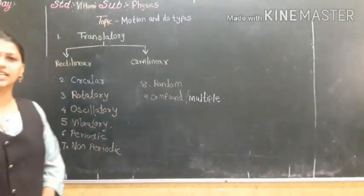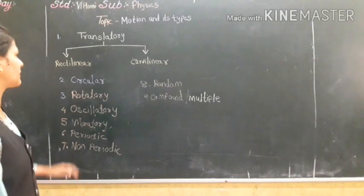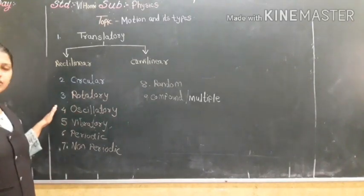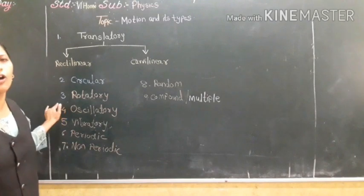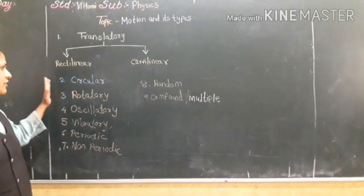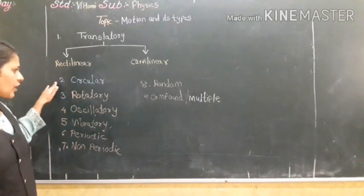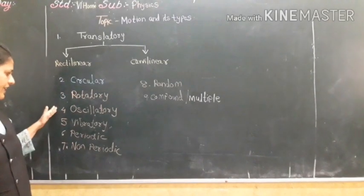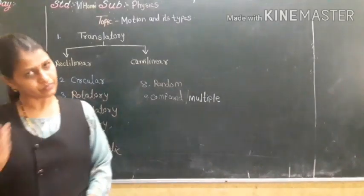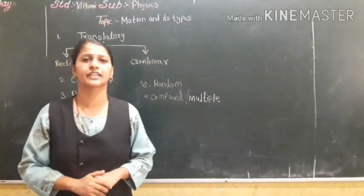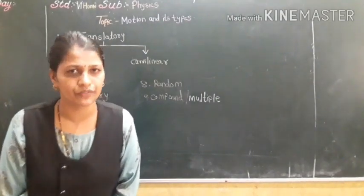Today's work will be: whatever motions we have discussed, write at least five examples of each — circular, rotatory, oscillatory, vibratory, periodic, non-periodic, random, and compound. Write at least five examples of each. Thank you, everyone.